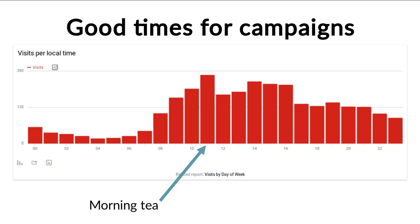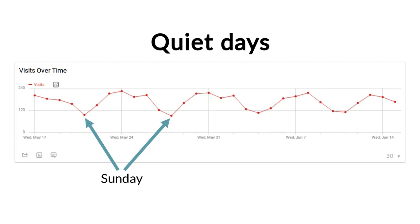When should you send something to people so that they are actually reading it? Apparently for this website, it is morning tea in New Zealand — a very good time to send something out around that time so that people see it in their feed, because they are standing there with their cup of coffee or tea, browsing the internet. Quiet days are probably not a time when you actually want to send something out. For this website as an example, avoid Sundays because nobody's checking their email then, and you can see very clearly this dip.